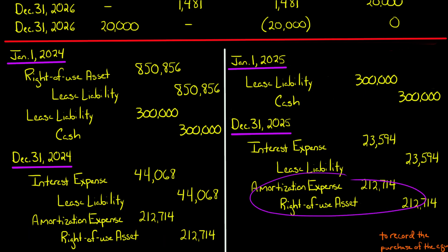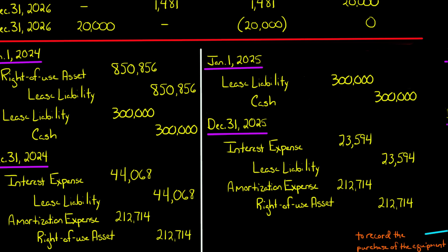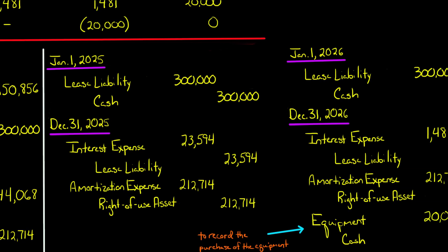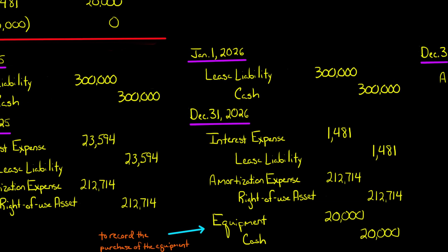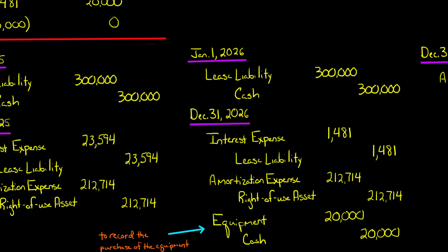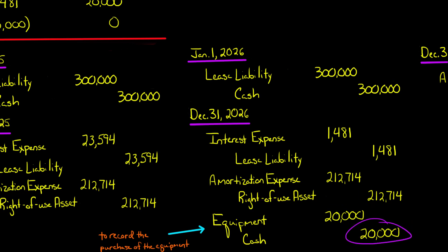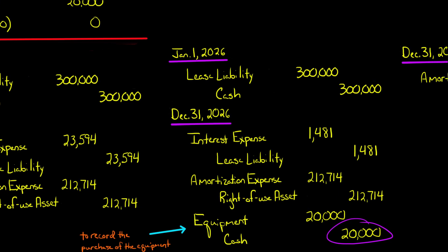Let me show you 2026 and 2027. In 2026, we've got the amortization again, and of course each period you're recording the interest expense. At the end of the third year, the lessee actually purchases the asset for $20,000 — so you credit cash for $20,000 and debit an asset account. I debited equipment, so they put this equipment on their books.